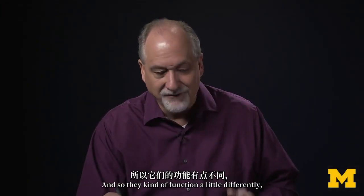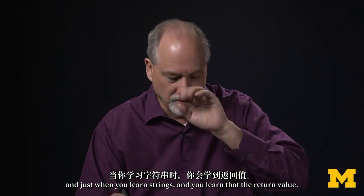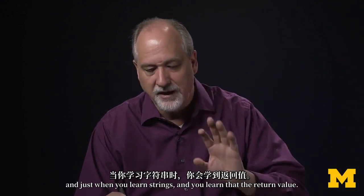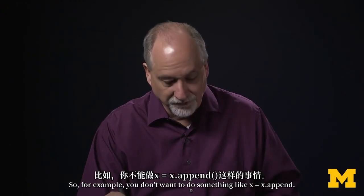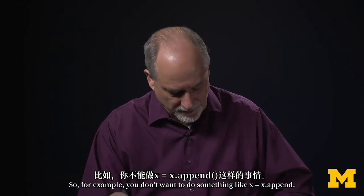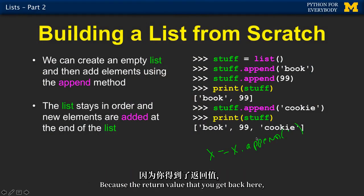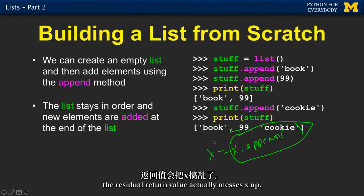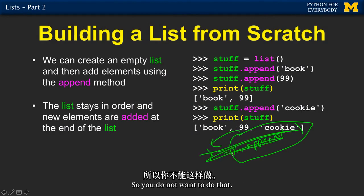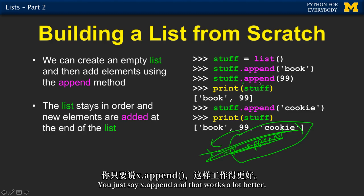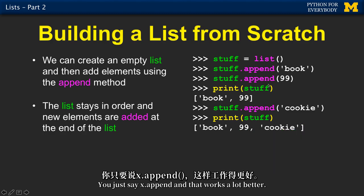They function a little differently. When you learn strings and learn that the return value matters — for example, you don't want to do something like x equals x dot append, because the residual return value actually messes x up. So you do not want to do that. You just say x dot append, and that works a lot better.